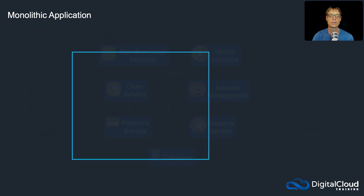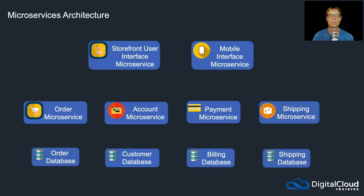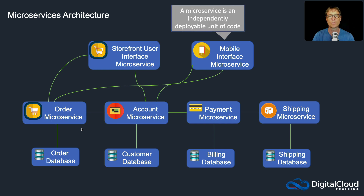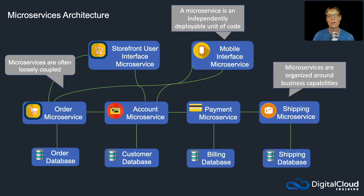So what's another way of doing this? Rather than using a monolithic application, we can move to what we call a microservices architecture. In this case, what we're doing is separating each component of our application. We then often decouple them and connect them using APIs. We might put message buses in between so that we have loose coupling. And we may separate the databases, so we have different databases for different components of the application to store information. Each of these is a separate application that's running, and it can be deployed as what we call a microservice — an independently deployable unit of code. They're often loosely coupled and organized around business capabilities.